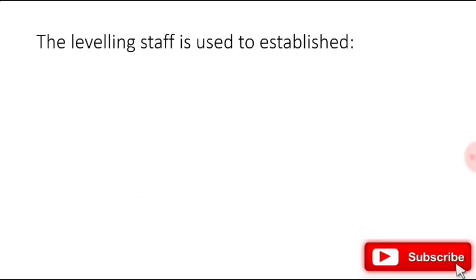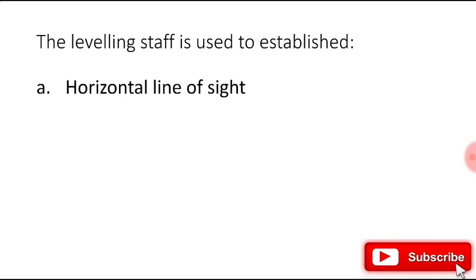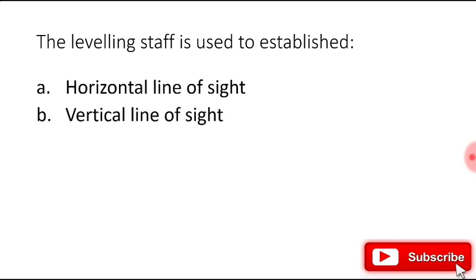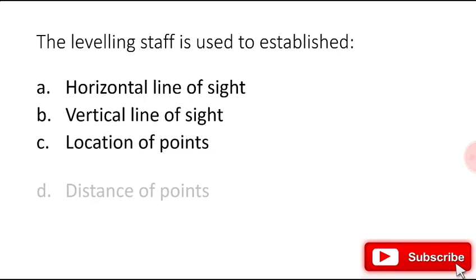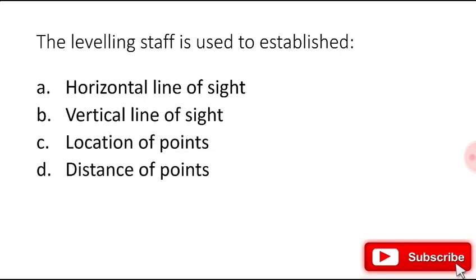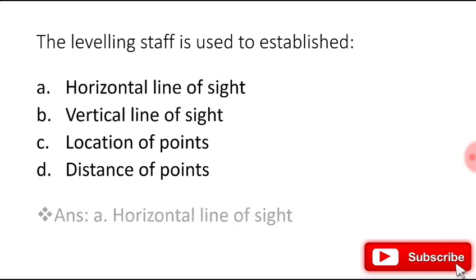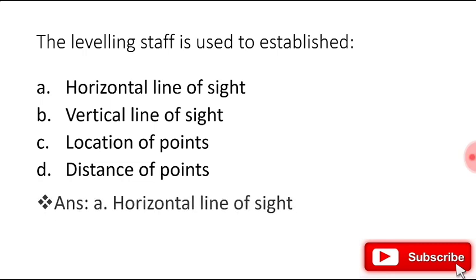The leveling staff is used to establish: horizontal line of sight, vertical line of sight, location of the points, or distance of the point? The right answer is horizontal line of sight.